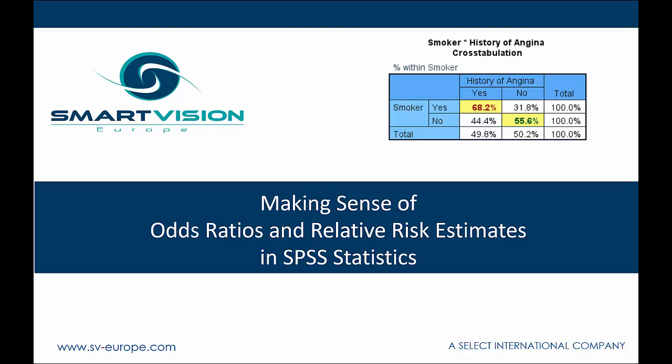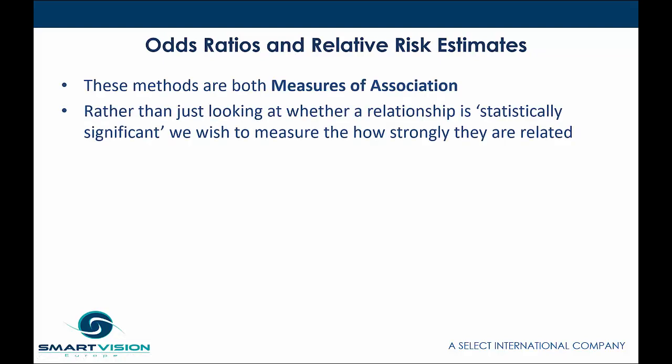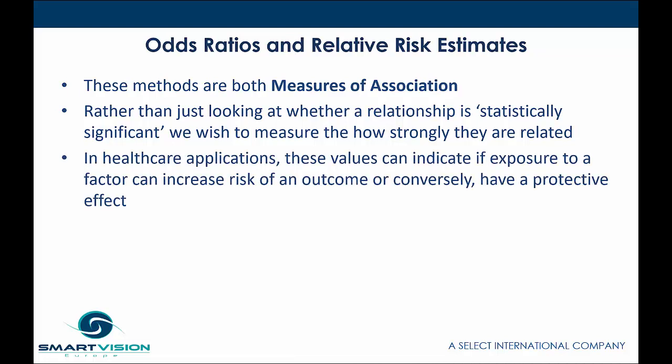Hi there, and welcome to Making Sense of Odds Ratios and Relative Risk Estimates in SPSS Statistics. Odds Ratios and Relative Risk Estimates are known as Measures of Association. These are measures where, rather than just doing a statistical test to establish whether or not a relationship is statistically significant, we wish to measure how strongly related one factor is to another. In healthcare applications, these values can indicate if exposure to a particular factor can increase the risk of an outcome, or conversely even have a protective effect.